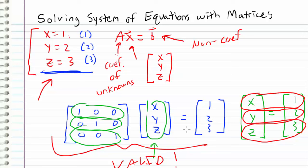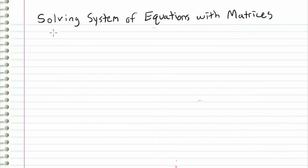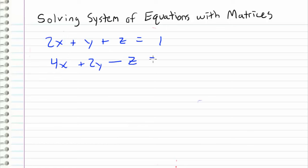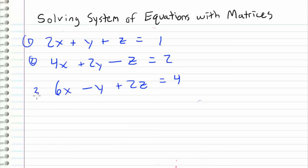The reason I wanted to illustrate this is to show that we can represent systems of linear equations using the form Ax equals b. Now let's consider a less trivial example. Let's say we have two x plus y plus z equals one, four x plus two y minus z equals two, and six x minus y plus two z equals four. We have three equations and three unknowns: x, y, and z, and we want to solve for them.